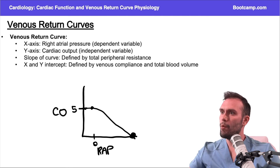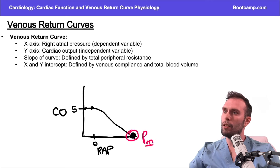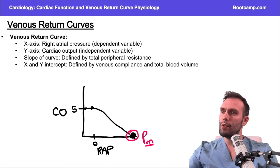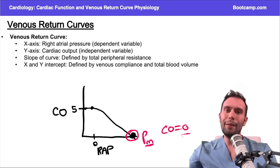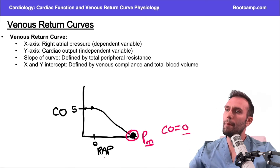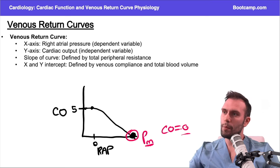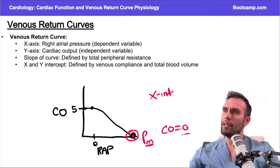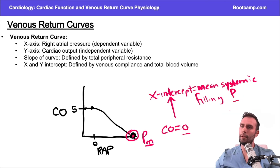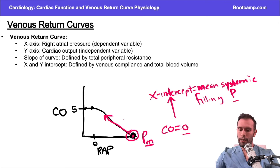I'll mark this point as Pm — the mean systemic filling pressure. As cardiac output goes to zero, eventually reaching the x-axis, the heart isn't pumping any blood forward. All that blood gets backed up, and the circulatory system equalizes in pressure on the venous side. This mean pressure is represented by where the curve intersects the x-axis — the x-intercept. When cardiac output is zero, we hit the x-intercept, and that gives us the mean systemic filling pressure, Pm. If the heart restarts and cardiac output goes back up, right atrial pressure will come back down.